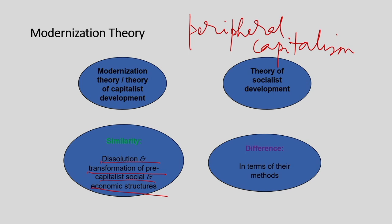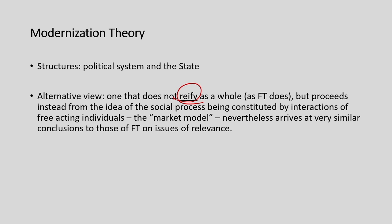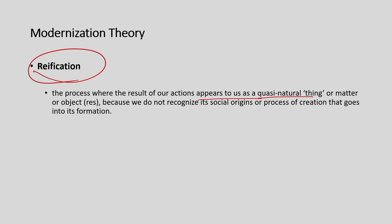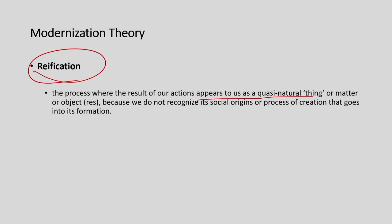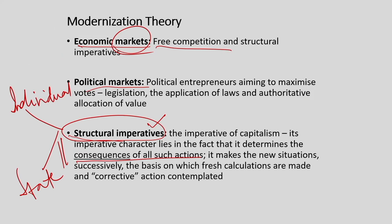We discussed reification — the process where the result of our actions appears to us as a quasi-natural thing because we do not recognize its social origins. We discussed economic markets in terms of free competition and foreign investment, political markets in terms of political entrepreneurs aiming to maximize votes, and the four important issues of the state and development. We will carry forward this debate in the next lecture.